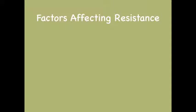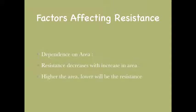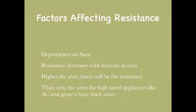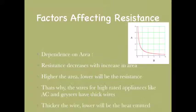Now let's study the third factor: area of cross-section. It was found that resistance decreases with an increase in area — higher the area, lower will be the resistance. This is why geysers have thicker wires comparatively, so thicker the wire, lower will be the heat emitted. The graph shows the inverse relationship between area and resistance.